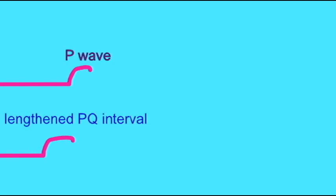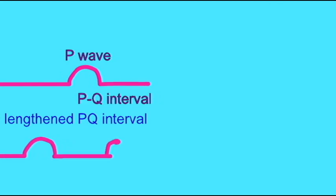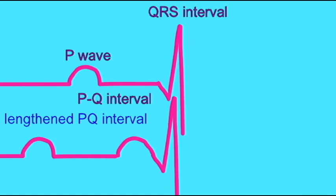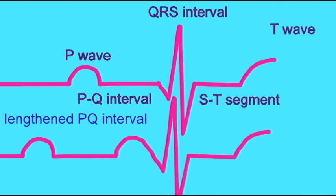Sometimes the lengthened PQ interval is so long that the repolarization of the atria can be seen as a separate electrical event than the depolarization of the ventricles. So before there is the QRS complex, there is a small U wave, which represents the repolarization of the atria.